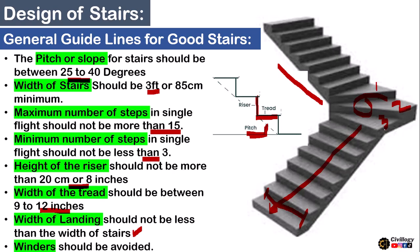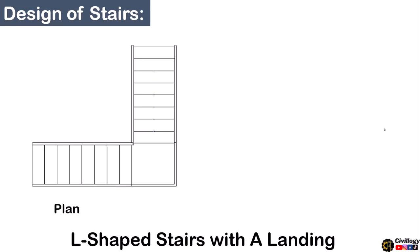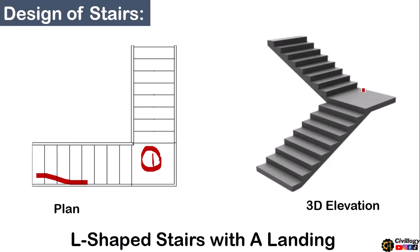In this video we are going to discuss the design of an L-shaped staircase with a landing. The landing is the horizontal portion of a staircase without steps between flights. As seen in the 3D elevation, this resting portion between two flights is called the landing. The number of steps in a single flight should not be more than 15 and not less than 3.